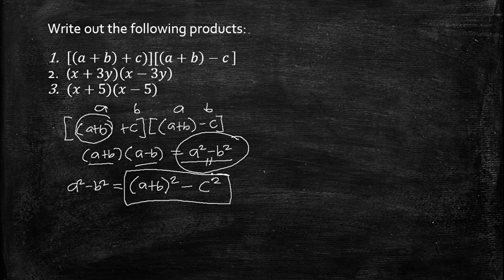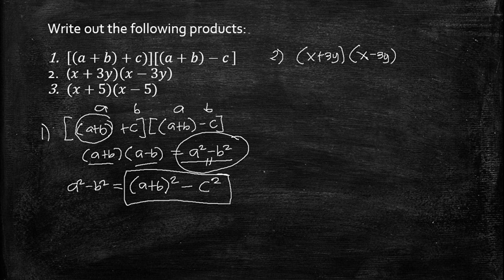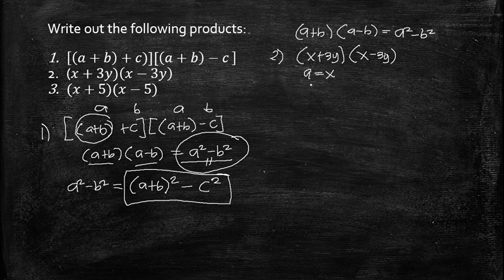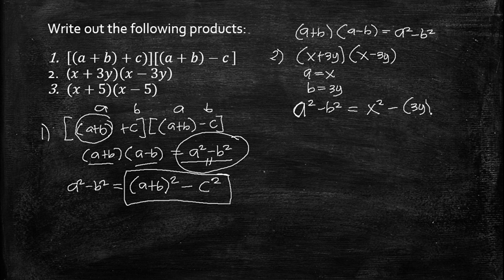For number two, we have (x + 3y)(x − 3y). This is also in the form (a + b)(a − b) = a² − b², where a = x and b = 3y. So the answer is x² − 9y².